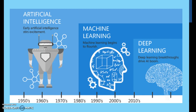I'll be discussing artificial intelligence in another session. Under artificial intelligence, we have machine learning, and under machine learning, we have deep learning. You can think of deep learning as a part of machine learning, and machine learning as a part of artificial intelligence.